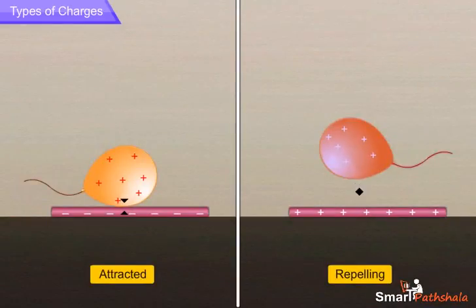This indicates that the charge on the balloon is of a different kind from the charge on the straw and there are two kinds of charges. We can also say that charges of the same kind repel each other while charges of different kinds attract each other.